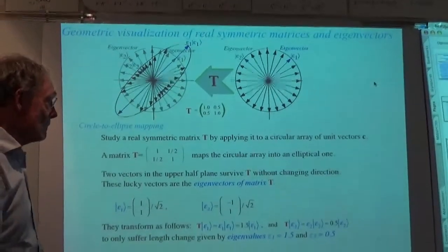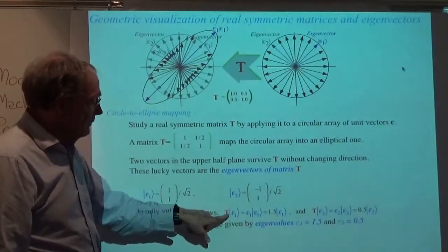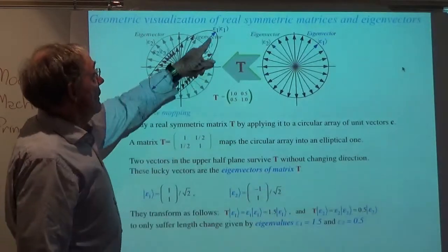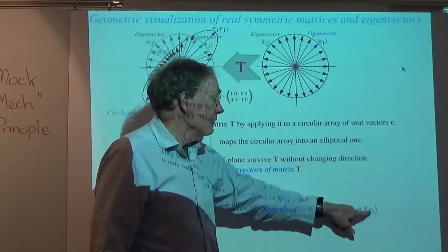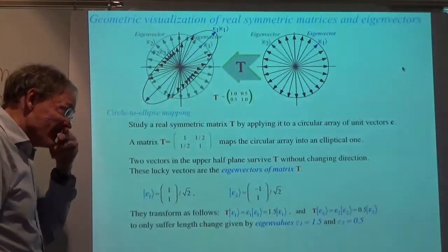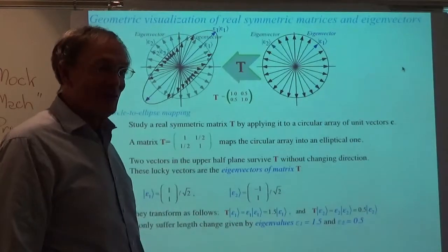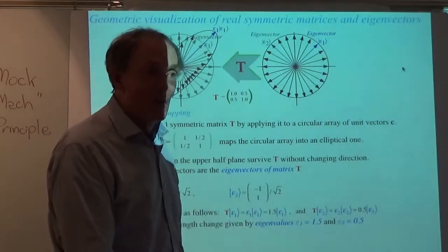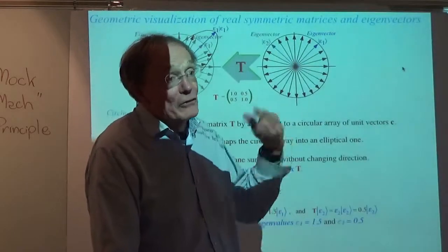T of epsilon one is just epsilon one times its eigenvalue, which is one and a half. And this one is also staying in the same direction but got shorter — its eigenvalue is a half. So they suffer a little, but they don't have to change their directions. Occasionally you have an eigenvalue of one and it doesn't change at all. All the vectors going through our analyzers essentially have eigenvalue of one — it's just a complex phase.